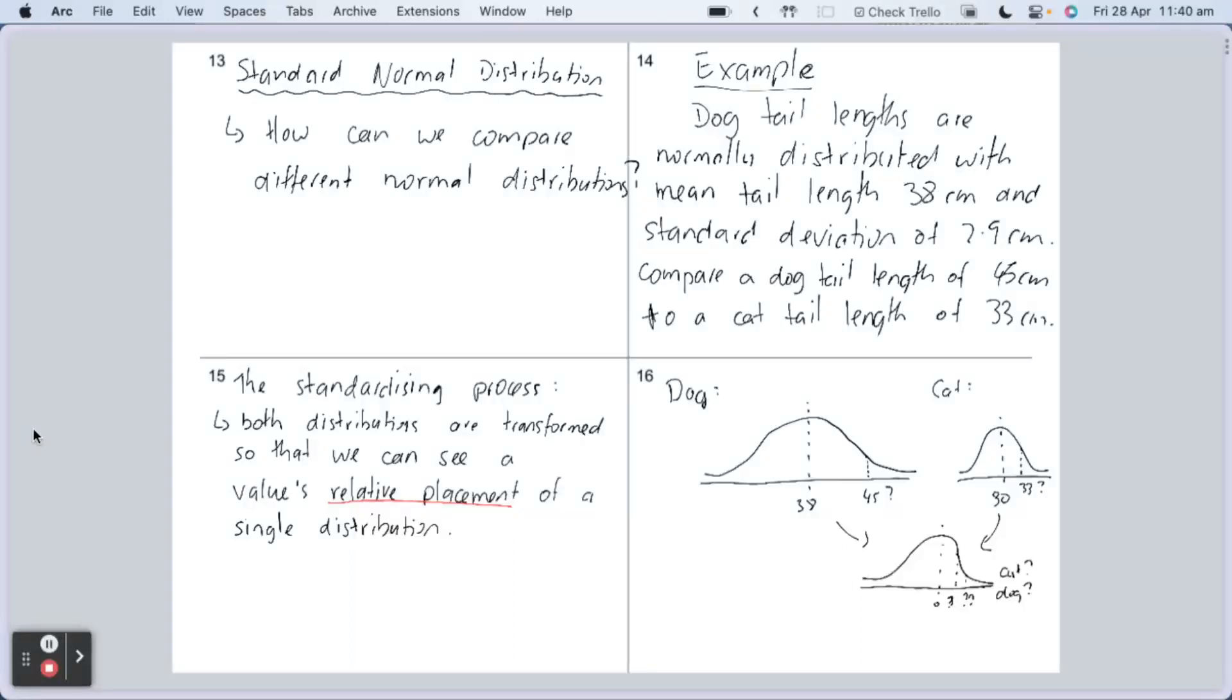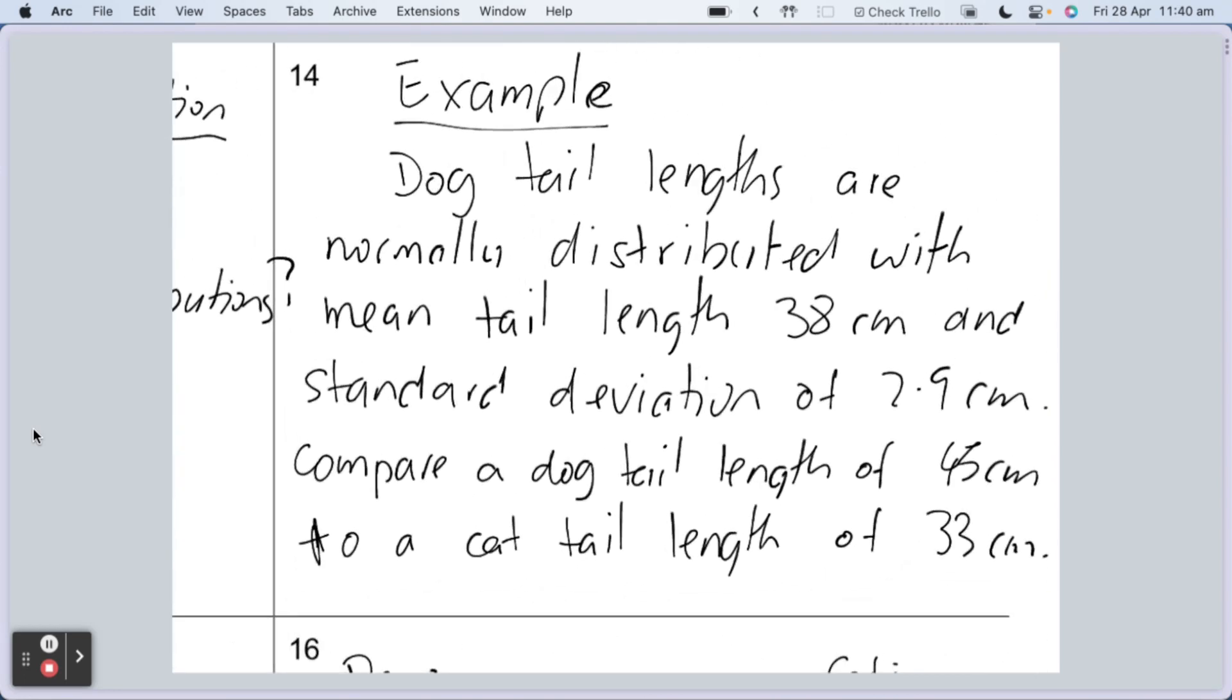So last lesson we looked at the standard normal distribution. I talked about it in a little bit of detail, so I'll give you the example problem again here so you can see it. We have dog tail lengths are normally distributed with a mean tail length of 38 centimeters and standard deviation of 2.9 centimeters. I asked you to compare the dog tail length of 45 centimeters to a cat tail length of 33 centimeters, with the issue being that because there was a different mean tail length for a cat versus a dog and a different standard deviation, it was a challenge to compare them relatively.